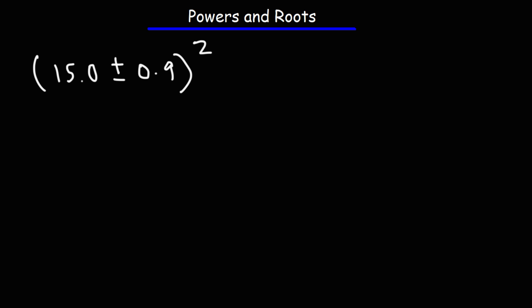If we square it, what's going to happen? Well before we apply the calculation, we need to convert the uncertainty into percent uncertainty. To do that we're going to take the uncertainty, divide it by the measured value 15, and multiply it by a hundred percent.